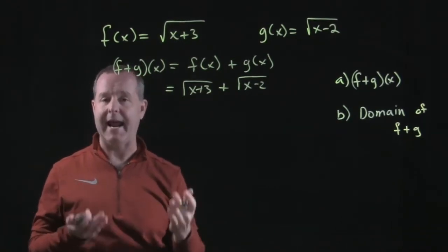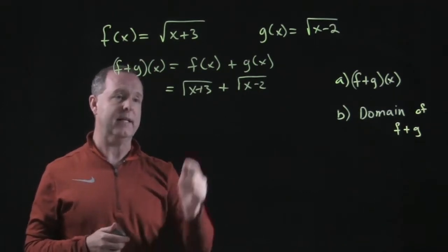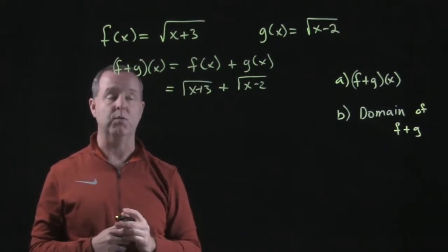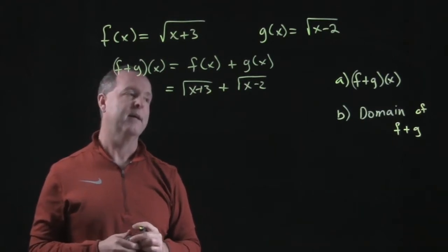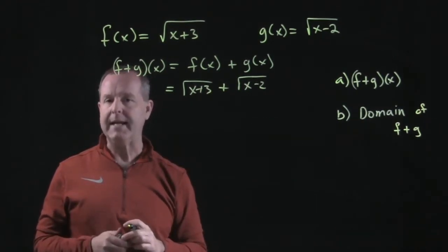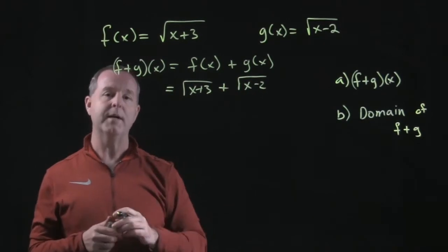We can't continue because our roots are different. We can't add unlike roots, so my final result is square root of x plus three plus square root of x minus two. Now for our domain, we want to look at the domains and figure out what domain is common to both of those functions.